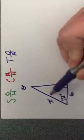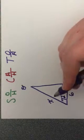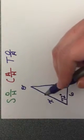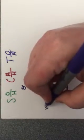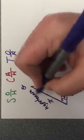Looking at this side right here, I know that this side is opposite my 90 degree angle, which means this must be my hypotenuse.